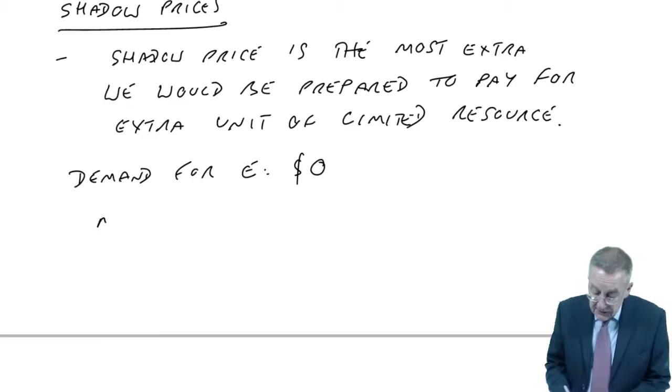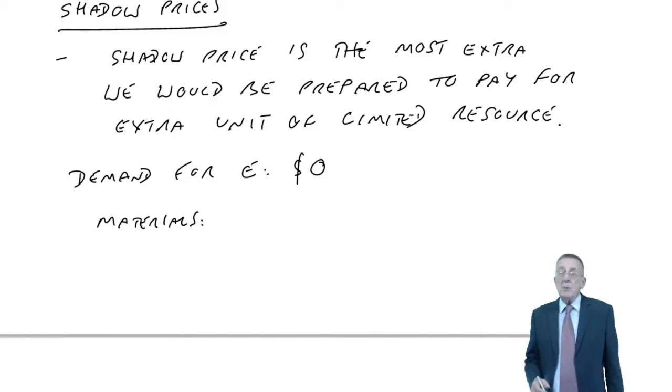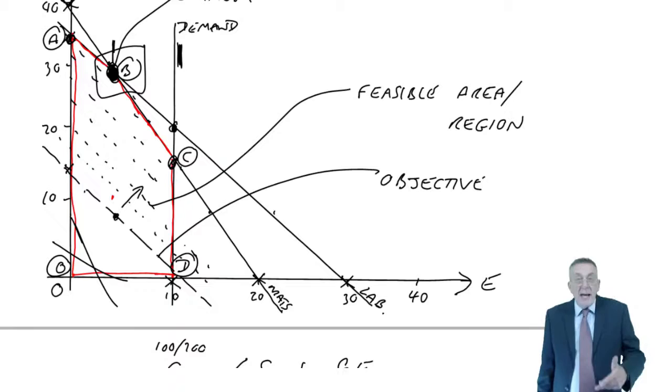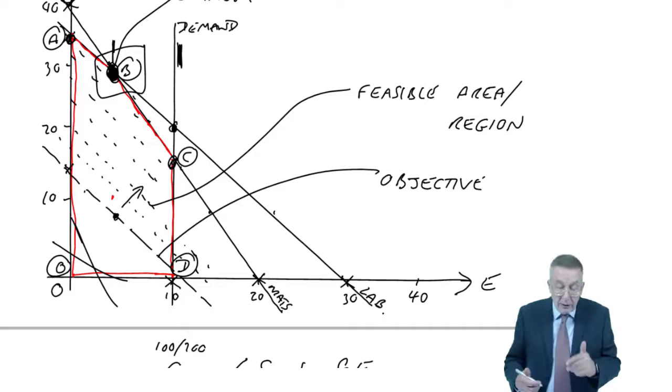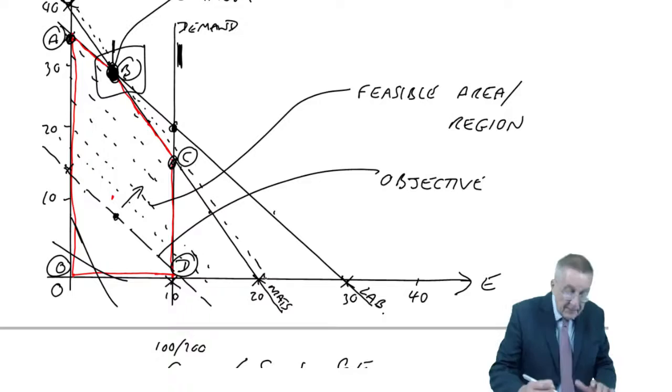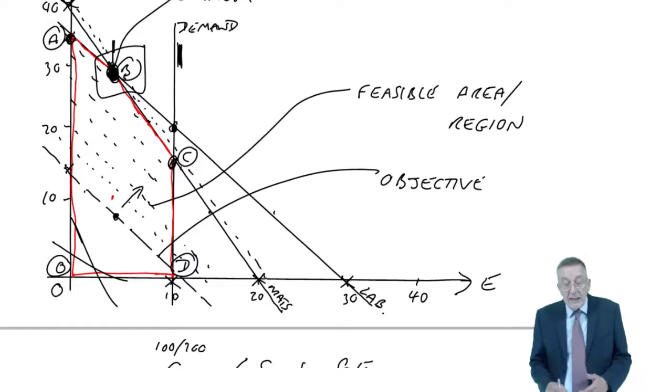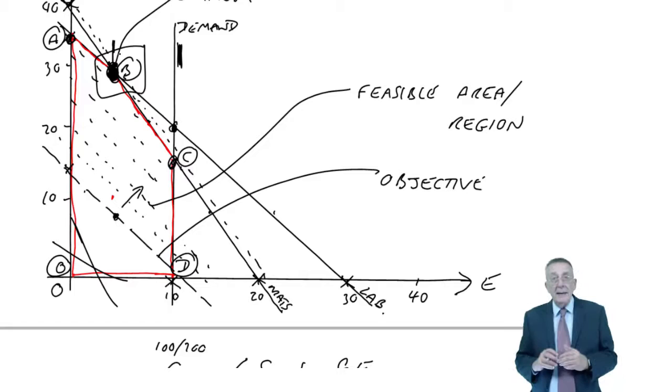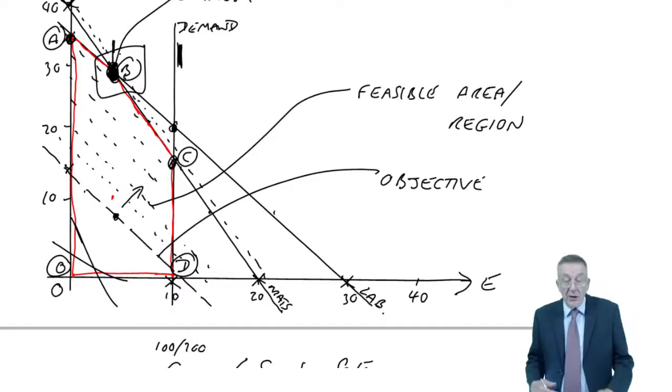What about materials? Here we are going to have to do some work. Because at the moment, we are using all 80 kilos that are available. If we could get one more kilo of material, if we had 81 kilos, the materials line would actually move out very slightly. And with more materials, we could produce a little bit more and make more contribution.